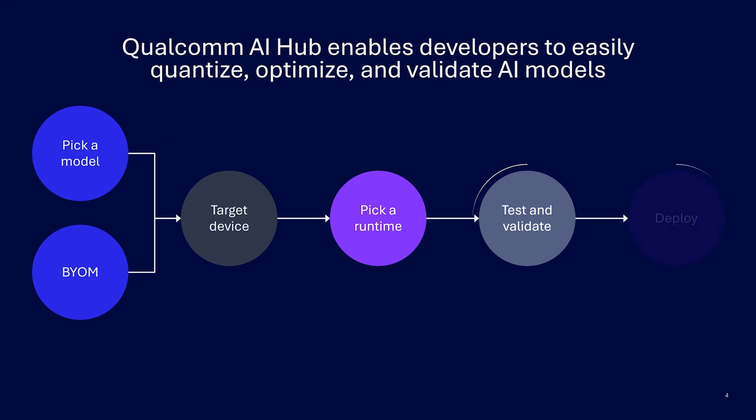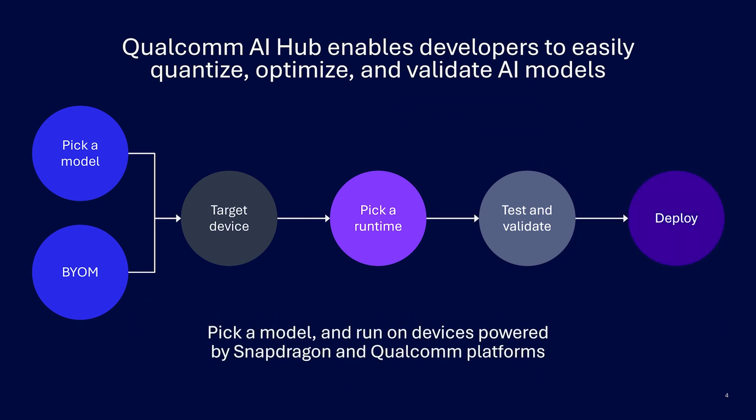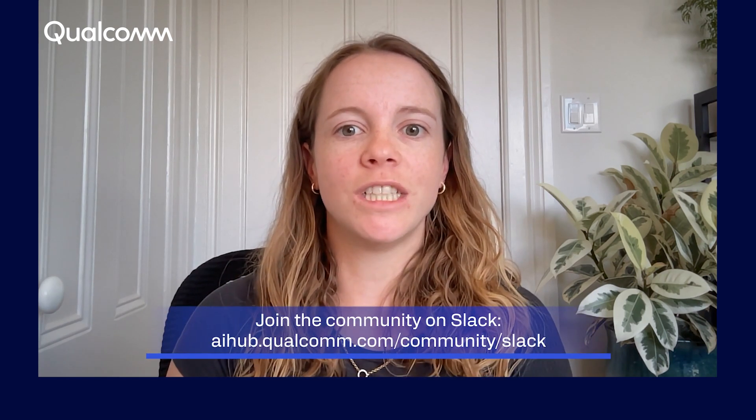Once performance and accuracy are confirmed, the optimized model can be seamlessly deployed on-device. And if you ever need help concerning the latency of your model or which compute unit it's running on, please reach out to the Qualcomm AI Hub team by joining our Slack community and submitting any questions you have there. Stay tuned for more videos on Qualcomm AI Hub.